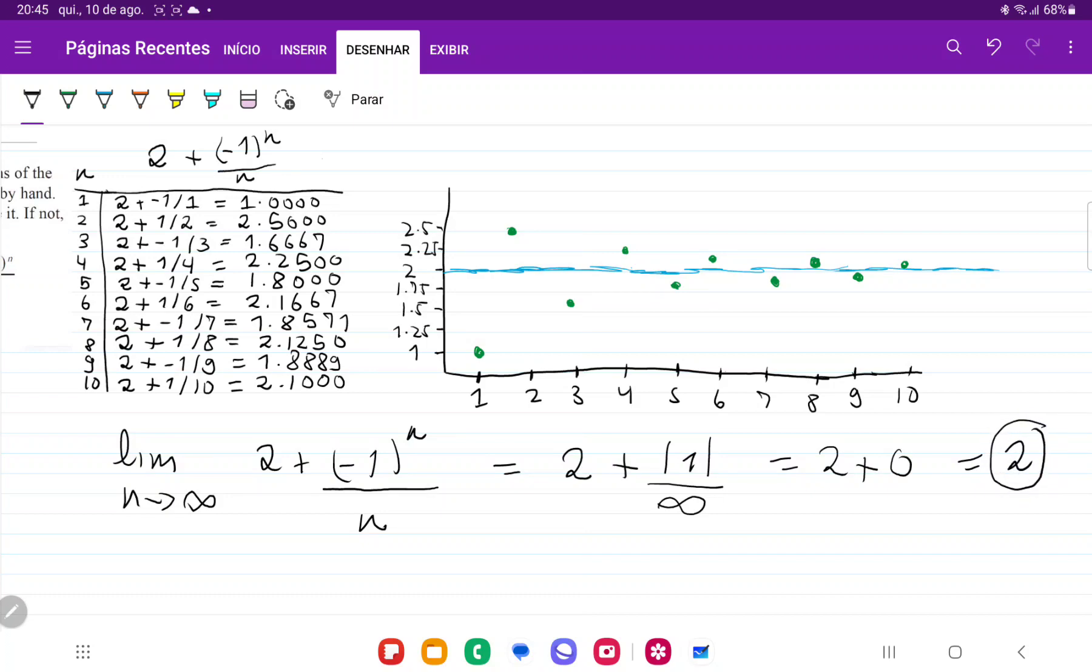And so 2 is our limit and we have proved it. And we drew this out and we guessed from the drawing that it was 2. So we were able to confirm it. And so that is it for number 20.